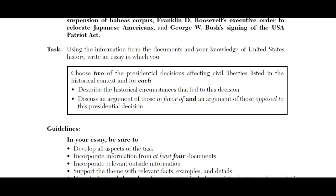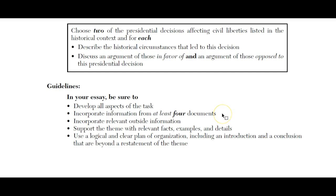To summarize the DBQ essay structure, it's a four-paragraph essay: introduction with a thesis, then one presidential decision covering historical circumstances plus an argument in favor and an argument against, then a second presidential decision with the same treatment, and then a conclusion. Incorporate information from at least four documents — aim for six if you can — and make sure you include outside information.